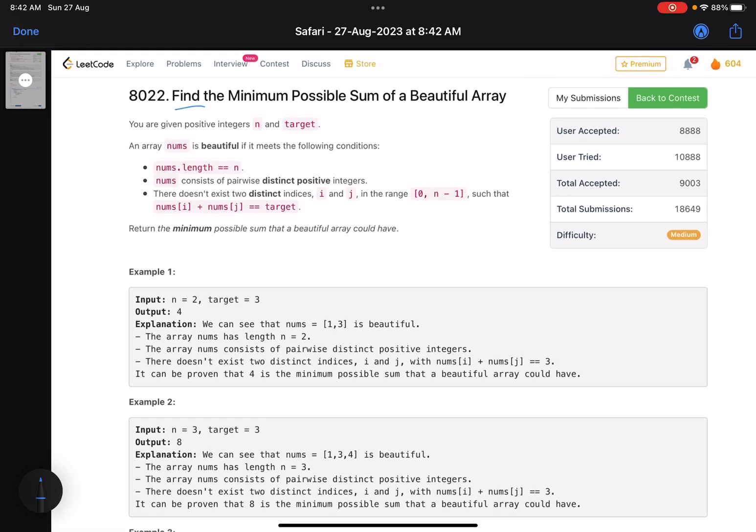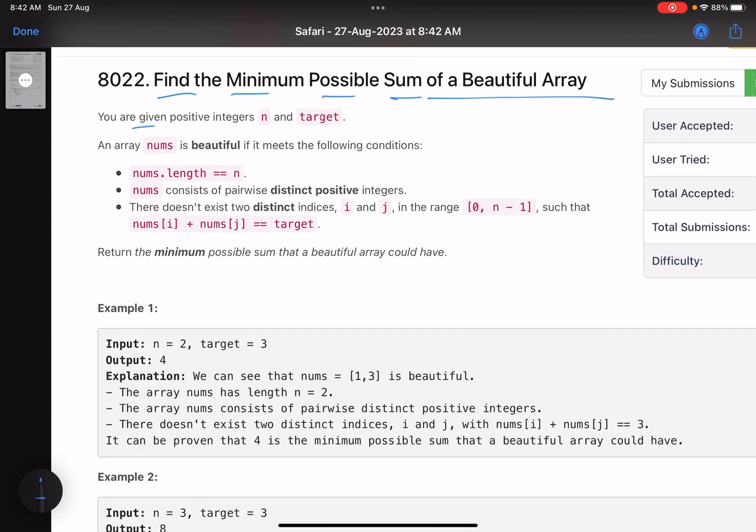The problem says: find the minimum possible sum of a beautiful array. You are given positive integers n and target, and an array nums is beautiful if it meets the following conditions: nums.length equals n, nums consists of pairwise distinct positive integers, and